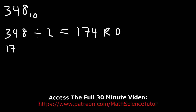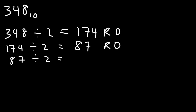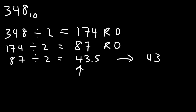Next, take 174 and divide it by two — that's exactly 87, remainder zero. Then take 87 and divide by two, giving 43.5, so it's 43 remainder one. To find the remainder, multiply two by 0.5, which gives remainder one.